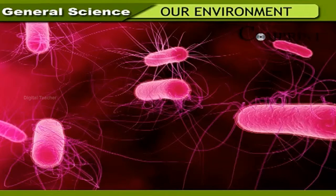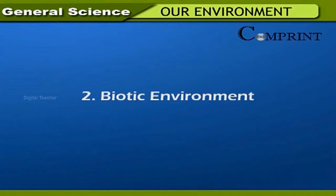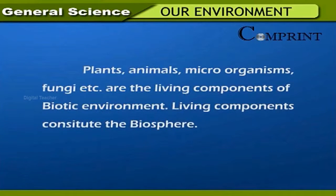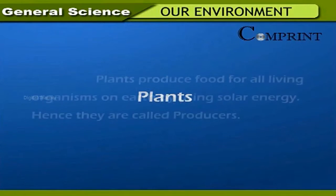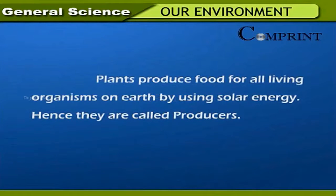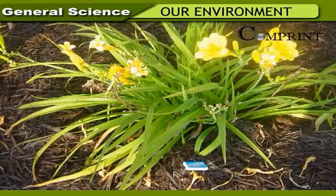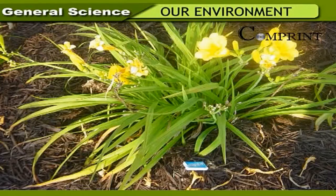Biotic environment: Plants, animals, microorganisms, fungi, etc., are the living components of the biotic environment, and together they constitute the biosphere. Plants produce food for all living organisms on earth by using solar energy, hence they are called producers. Since plants prepare their own food, they are called autotrophs. Food products like cereals, fruits, leafy vegetables, etc., are obtained from plants.